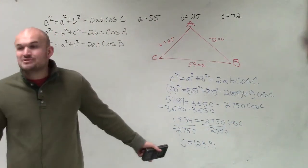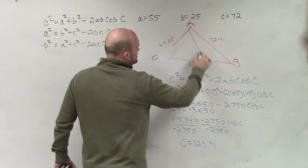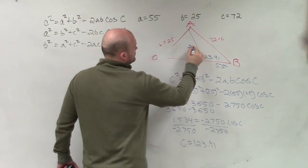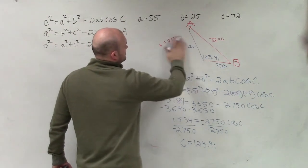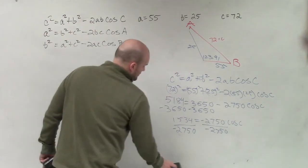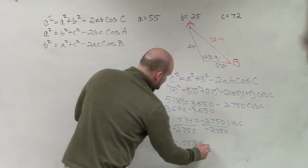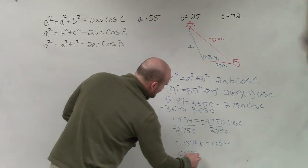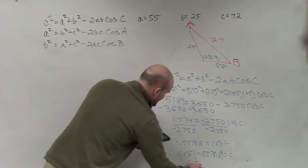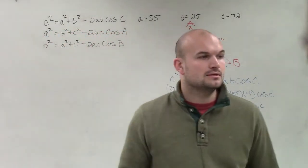That's awesome, because now I have an obtuse angle, right? So this C is obtuse. You end up getting negative 0.557818 equals cosine of C. Then you take the cosine inverse of negative 0.55781818, and therefore C equals 123.91.